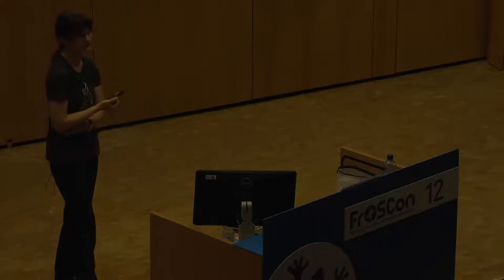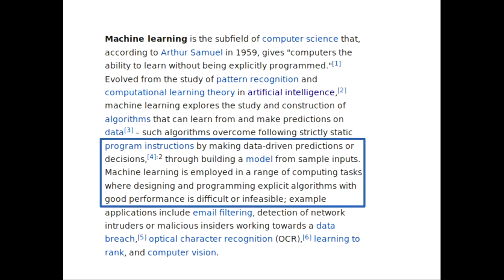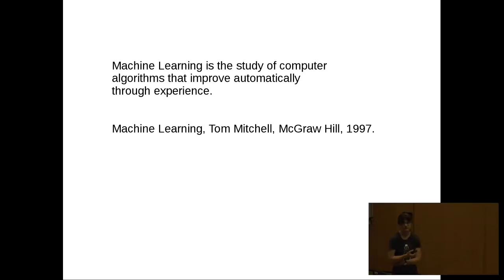Let's see what Wikipedia has to say — it's not particularly helpful. If you look at machine learning, we read something like: we want a program that makes data-driven predictions or decisions through building a model from sample inputs. Machine learning is employed in a range of computing tasks where designing and programming explicit algorithms with good performance is difficult or infeasible. If we take a look at the machine learning book by Tom Mitchell from 1997: machine learning is the study of computer algorithms that improve automatically through experience.